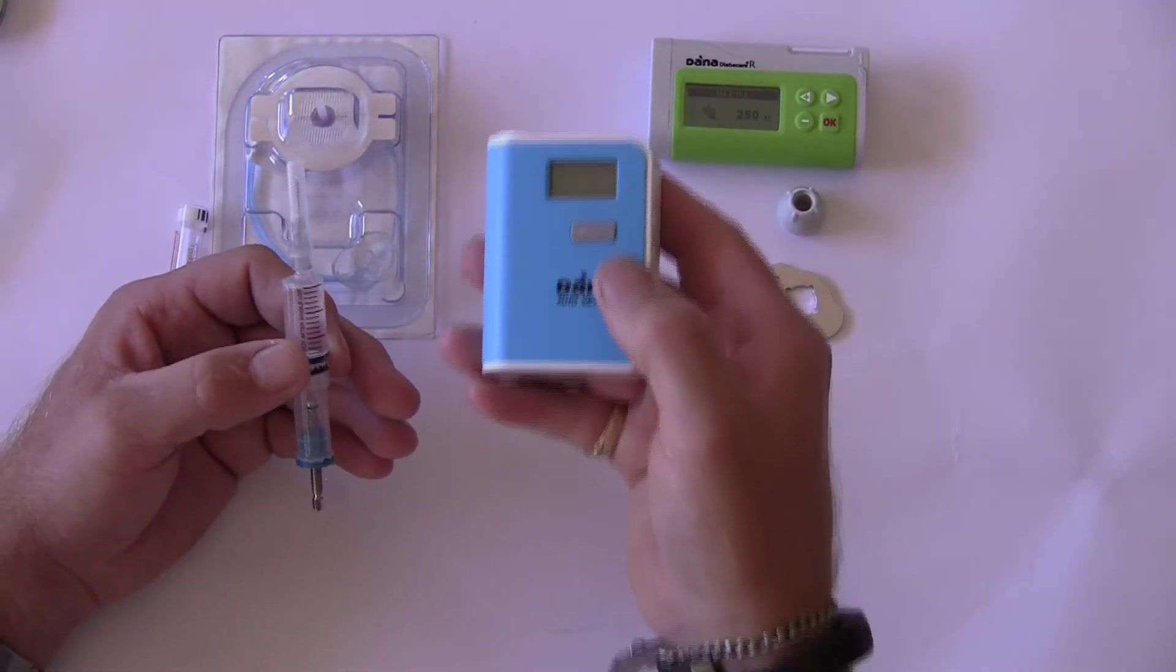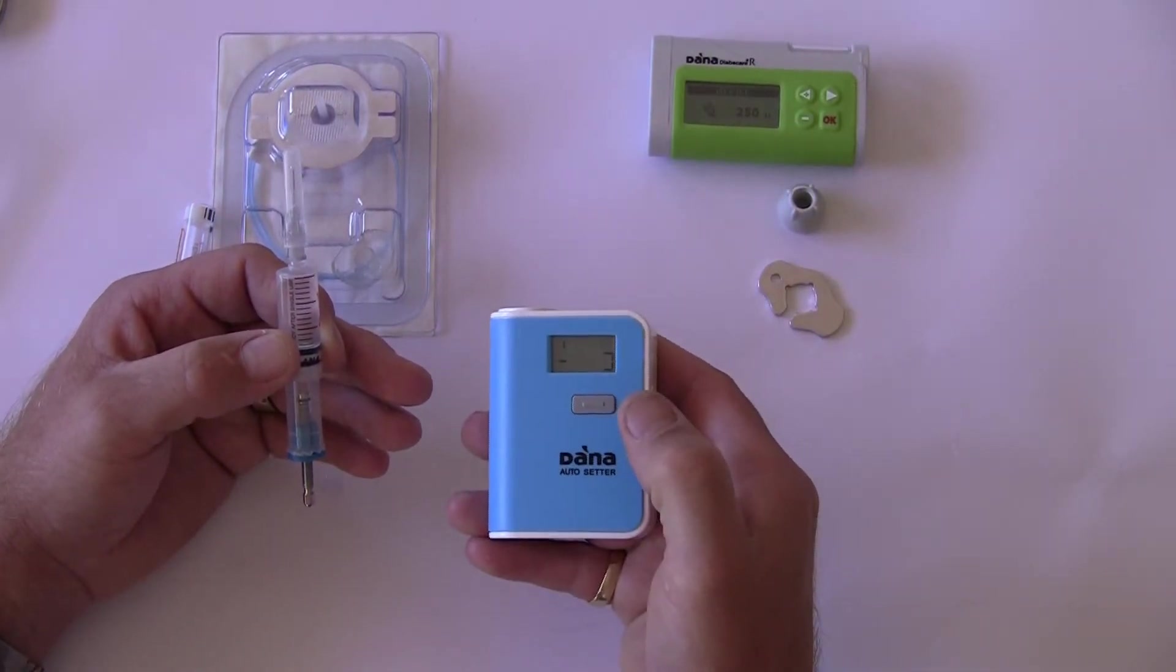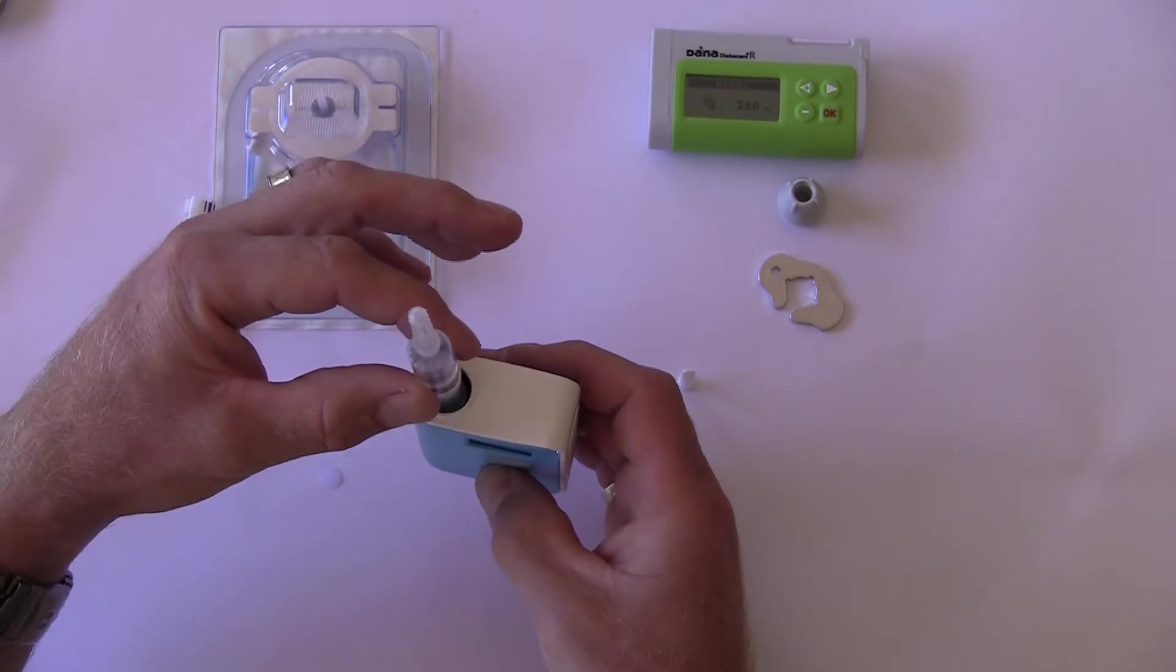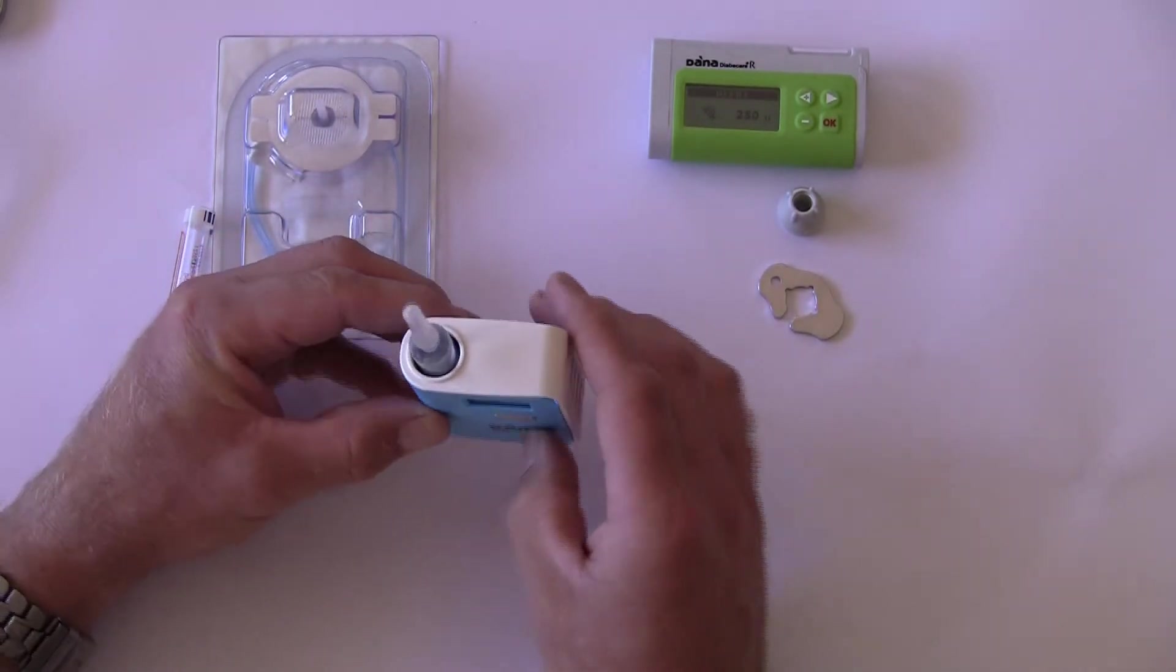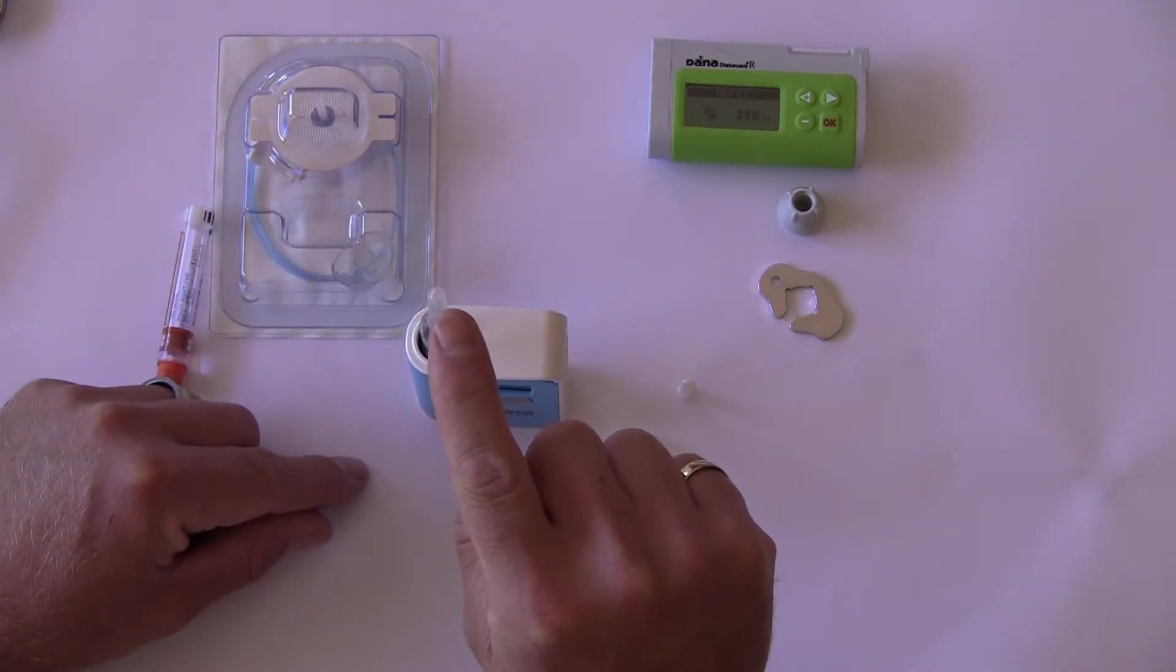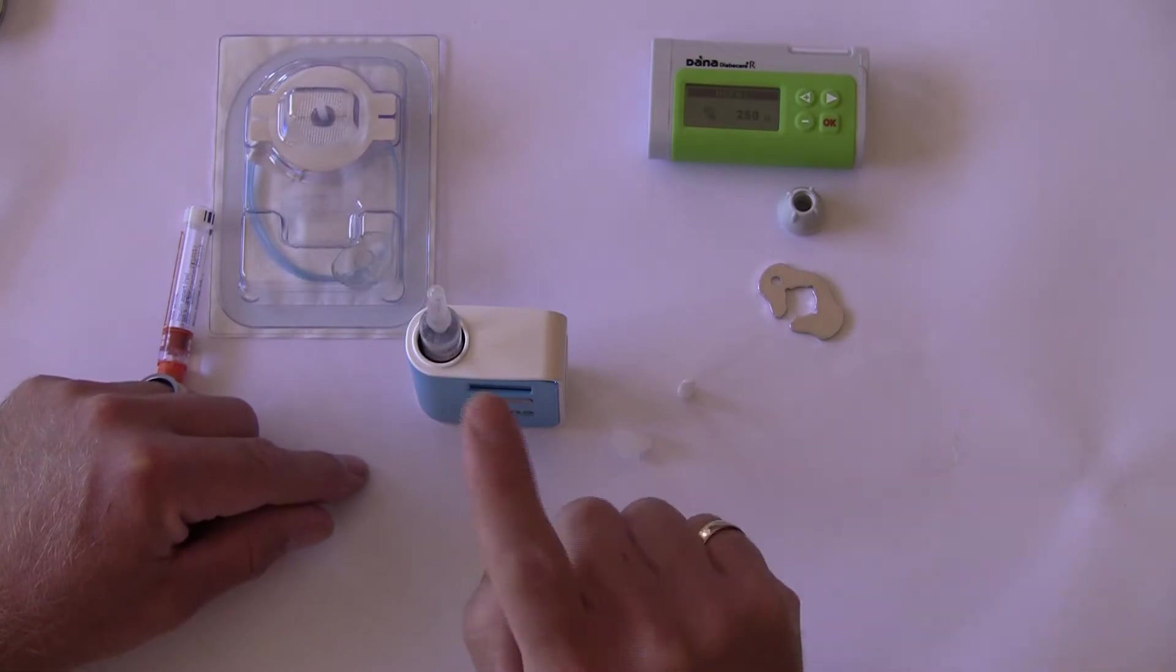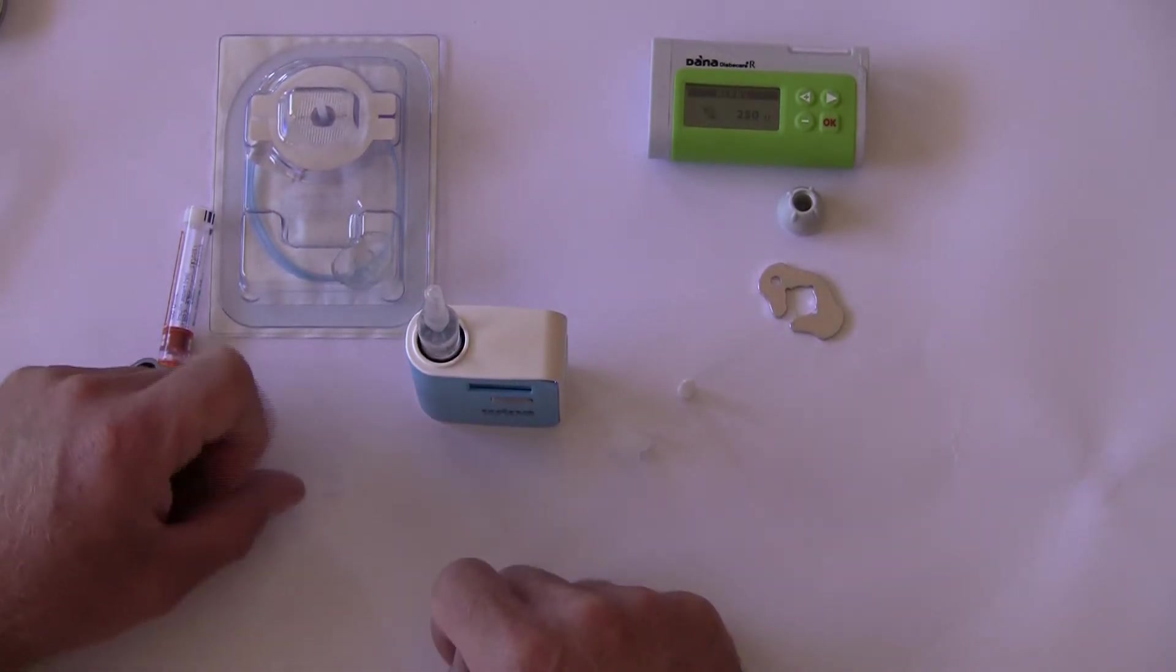We take the Dana Auto Setter which has already been paired with the insulin pump and press the display button once. We then load the full reservoir into the top of the device and press the button a second time. The Dana reservoir will wind all the way to the top. Once it reaches the top, it stops and reverses and goes back down again counting the volume of insulin.